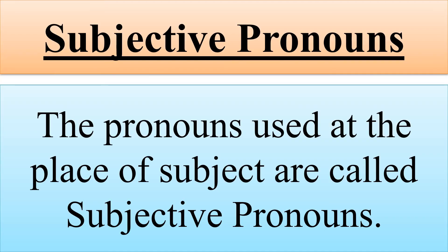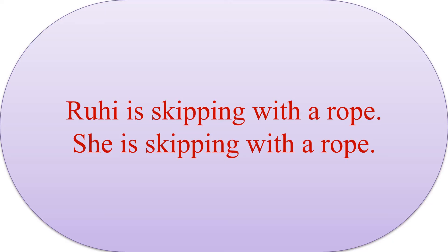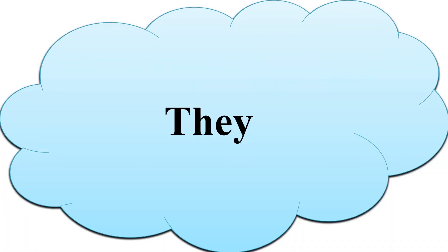Come to the subjective pronoun. The pronouns used at the place of subject are called subjective pronouns. Such as: Ruhi is skipping with a rope, so she is skipping with a rope. Yahaan par Ruhi subject hai, jo kaam ko kar rahi hai. 'She' ka use hum ne subject means Ruhi ki place par kiya hai. So 'she' is in subjective case. I, we, you, he, she, it, they are used at the place of the subject.